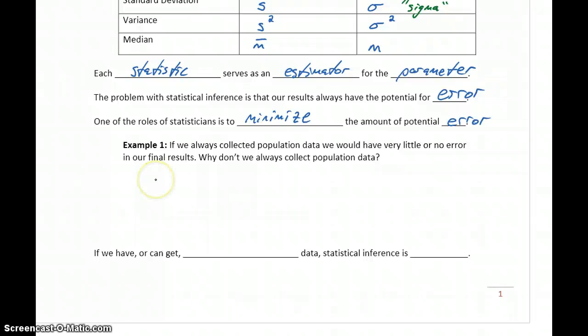In our first example, if we always collected population data, we would have very little or no error in our final results. So why don't we always collect population data?